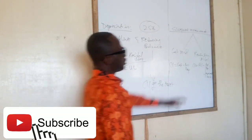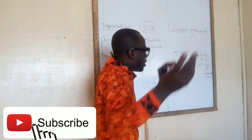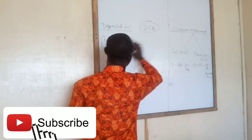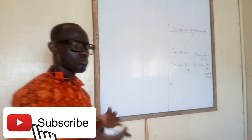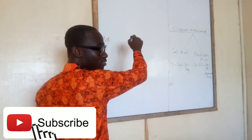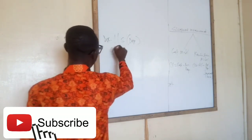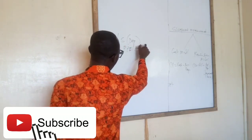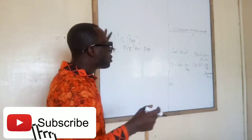With a cost model, it's not rocket science — it's simple. Once we calculate our depreciation, what is the double entry? We debit depreciation in the income statement, and then we credit property, plants and equipment — or what some call accumulated depreciation. That's the double entry. So with a cost model, it's straightforward.